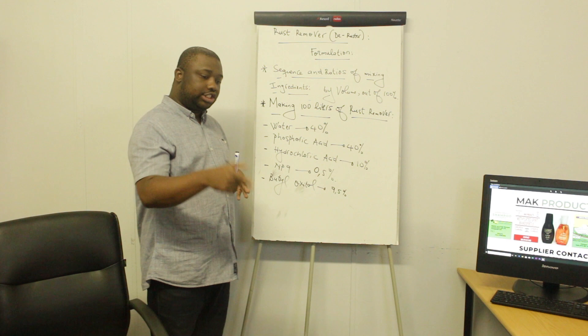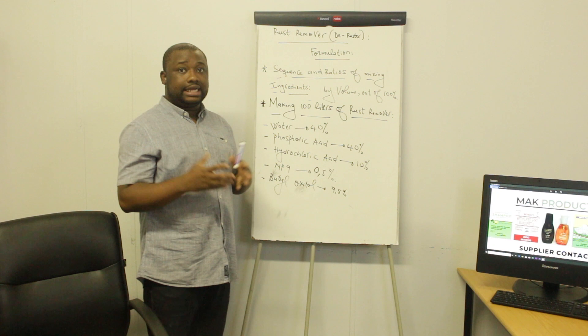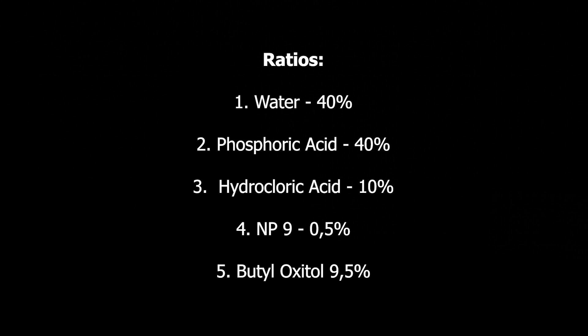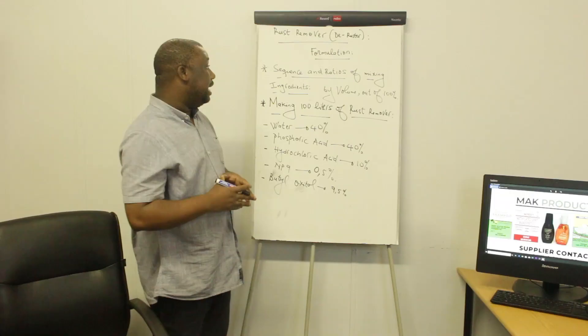In terms of proportions while manufacturing: water should be 40% of your total volume; phosphoric acid should be 40% of your total volume; hydrochloric acid — measured by volume — should be 10% of your total volume; and NP9 should be 0.5% of your total volume.